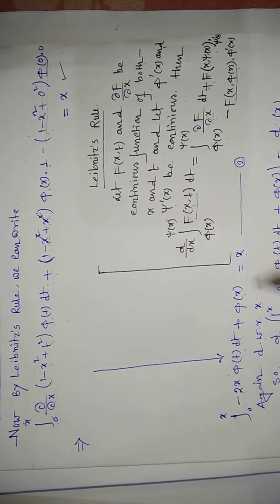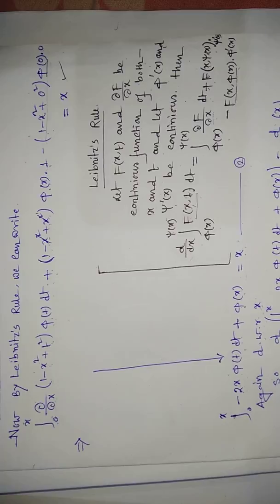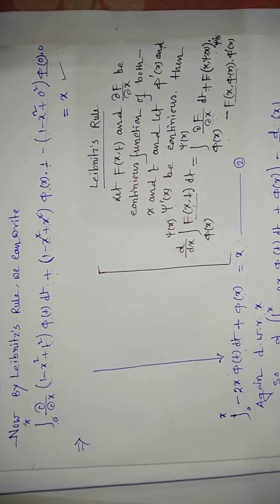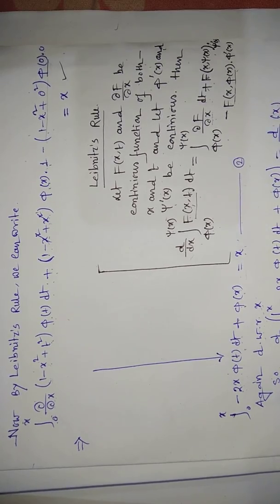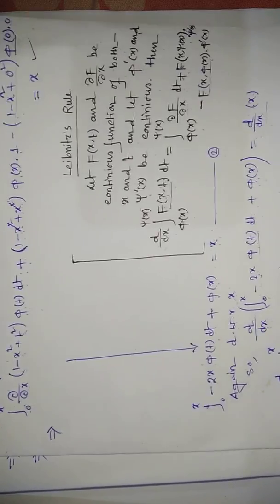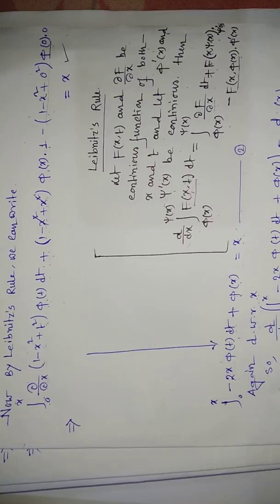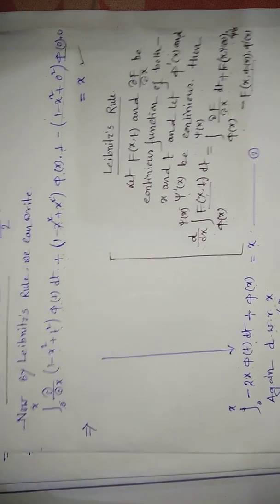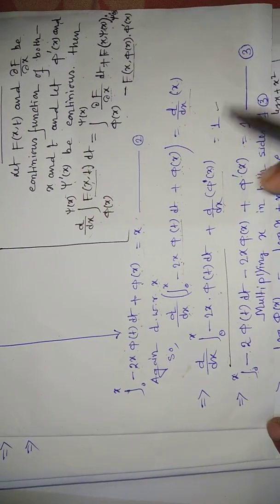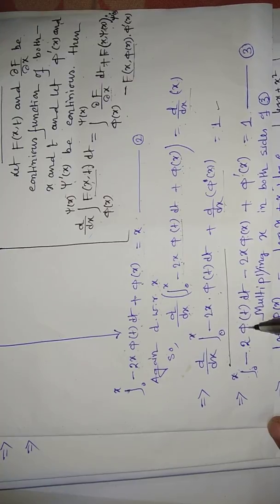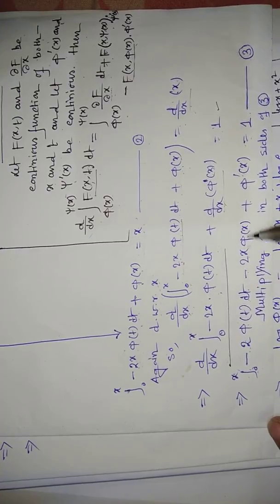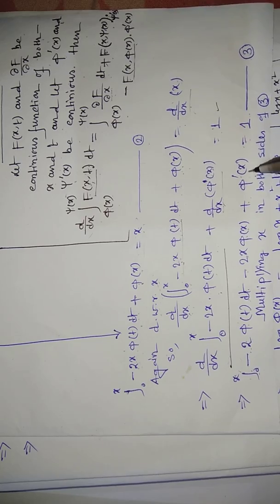Differentiating again with respect to x, and applying the Leibniz rule similarly: d/dx of the integral from 0 to x of −2x·φ(t) dt plus φ(x) equals d/dx of x. This gives the integral from 0 to x of −2φ(t) dt minus 2x·φ(x) plus φ'(x) equals 1. This is equation (3).